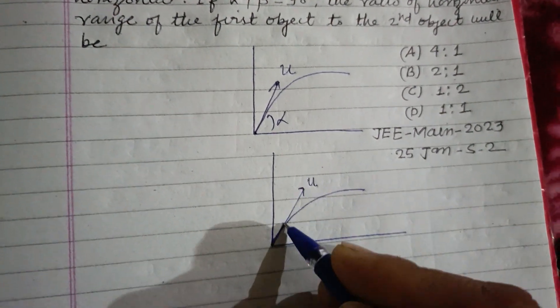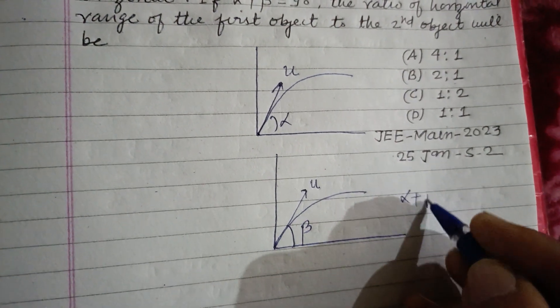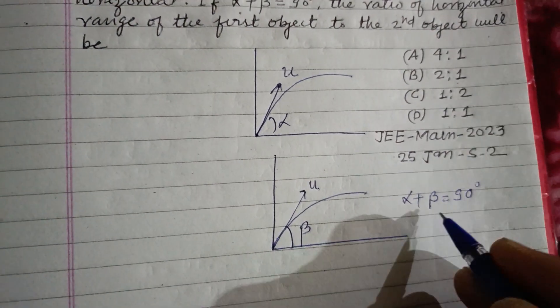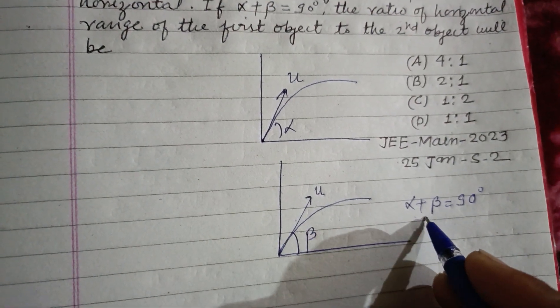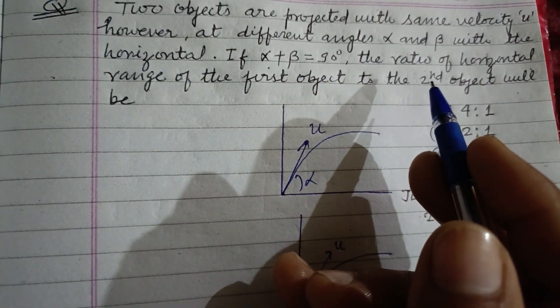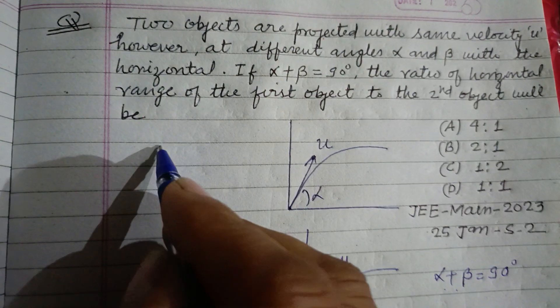With same velocity u. Here it is given alpha plus beta is 90 degrees, it means both angles are complementary to each other. The ratio of horizontal range of the first object to the second object.